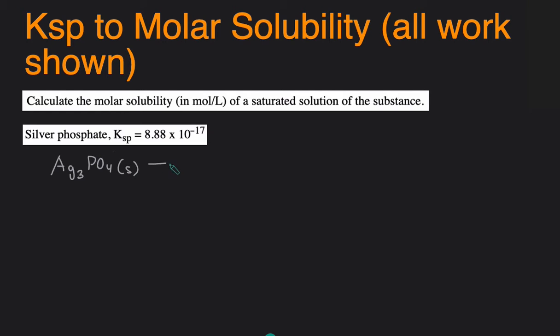So we start with the solid and then break it down or dissociate it into its ions. So it breaks up into silver ion which has a positive one charge and phosphate ion which has a three minus charge. And since we have three silvers on the left we're going to put a three in front of the silver ion on the right.